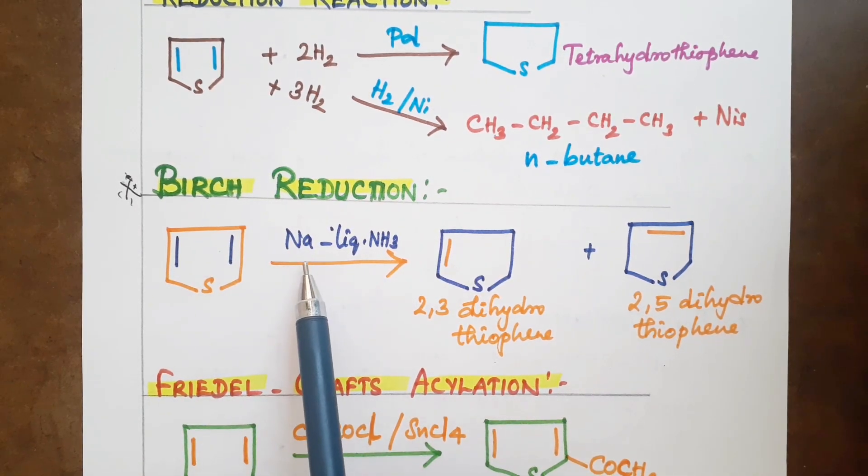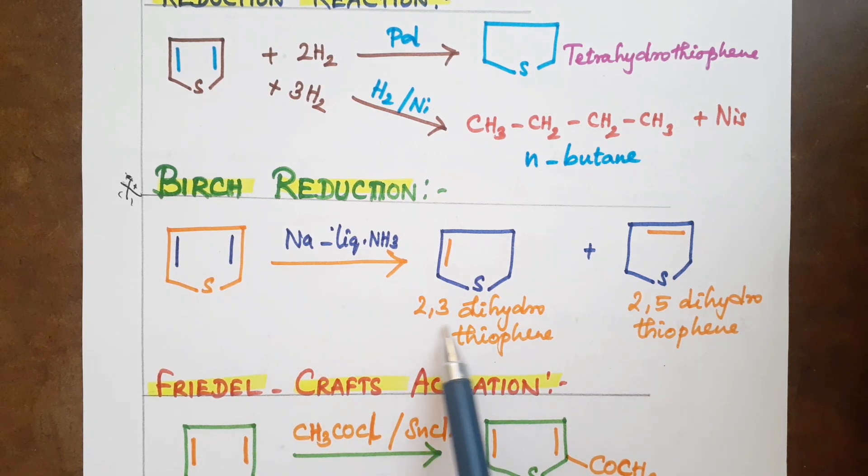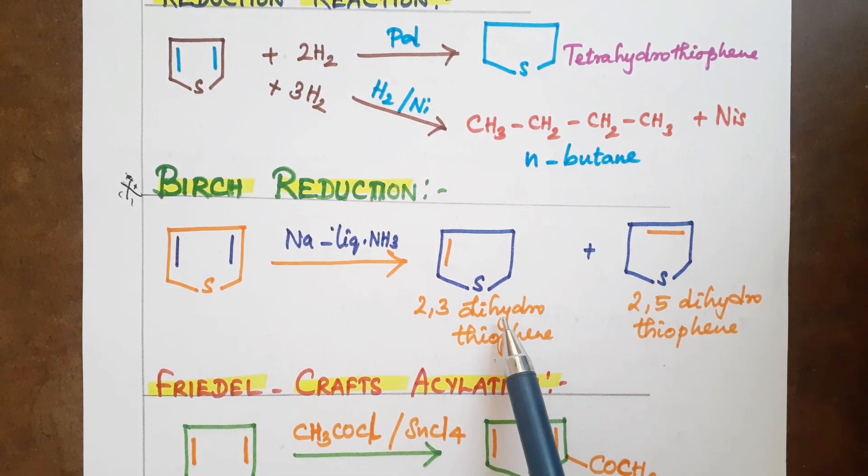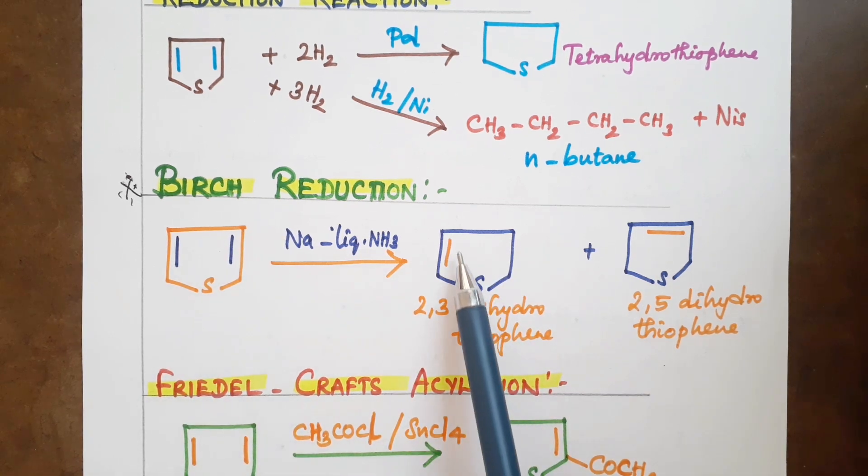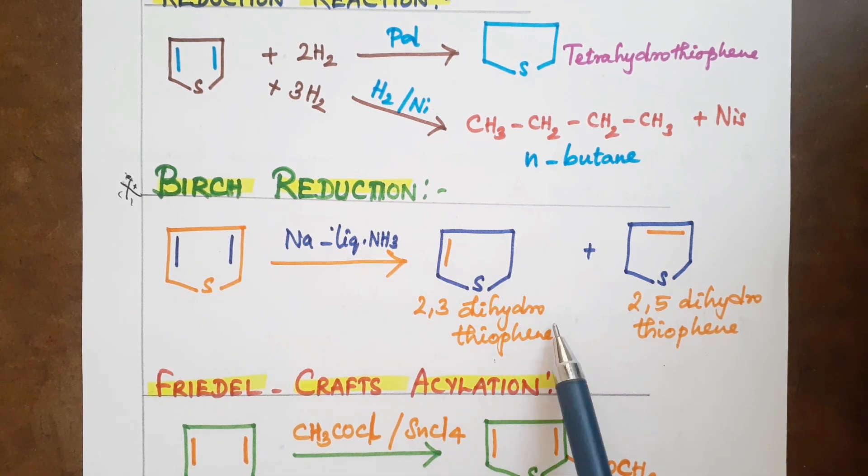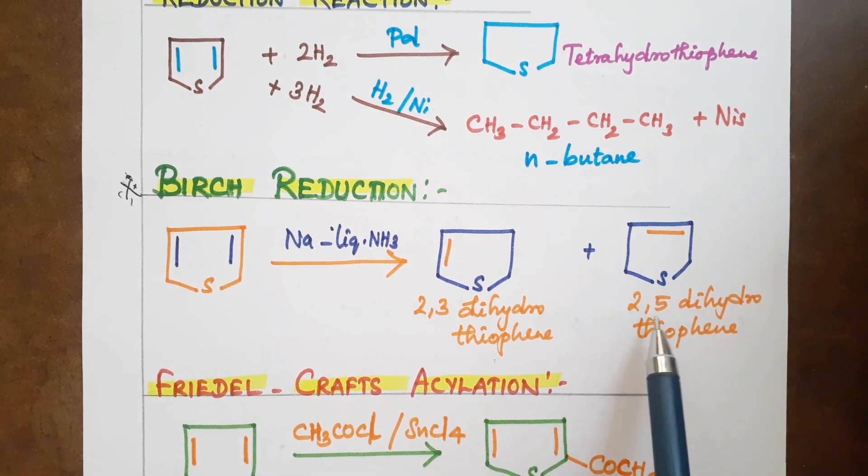Birch reduction: Thiophene reacts with sodium in presence of liquid ammonia, giving 2,3-dihydrothiophene. Thiophene has a double bond; it gives 2,3-dihydrothiophene or 2,5-dihydrothiophene.